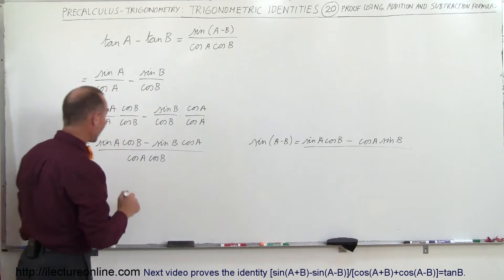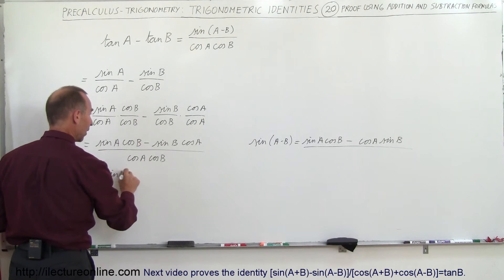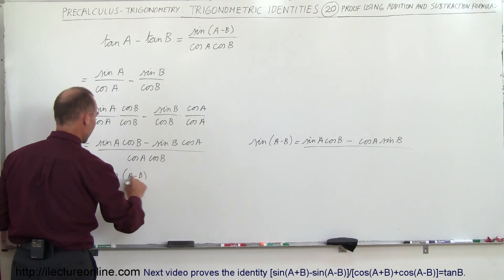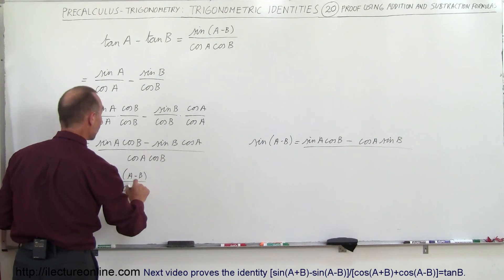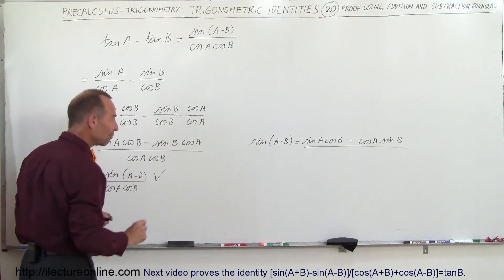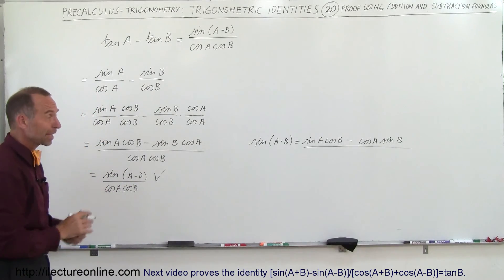And therefore we can write this as sine of A minus B divided by cosine A times cosine B, which is equal to what I have over there. So we've proved this identity, and that's how we do that.